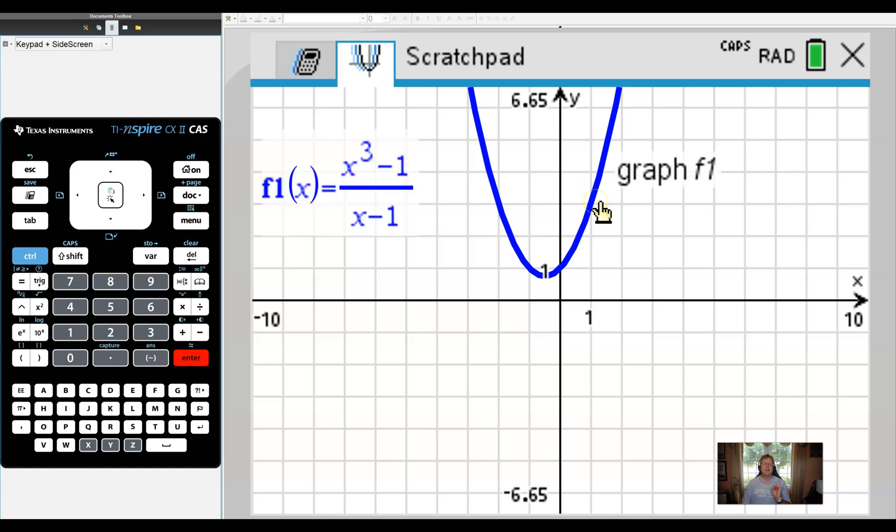But for right now, let's just understand that there's supposed to be a hole there. We can still find this limit whether that hole shows up or not.